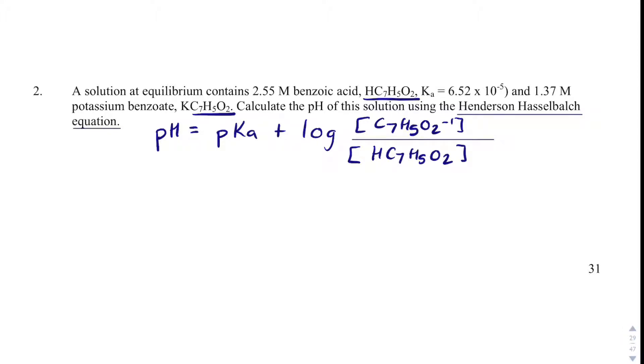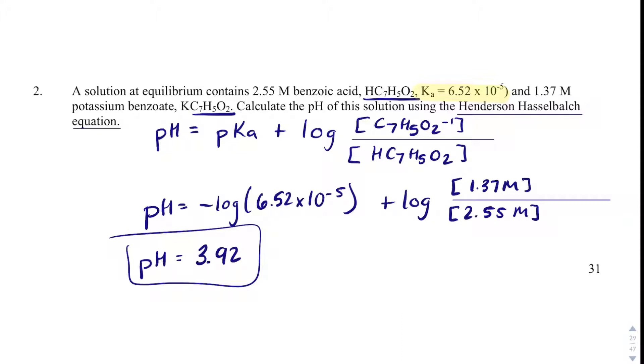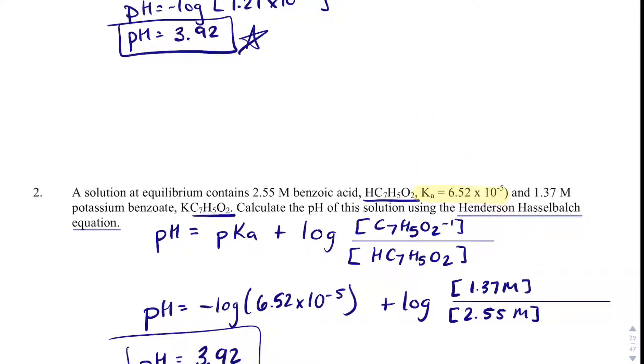And all we're going to do is plug in what we know. We are trying to solve for pH. They do not give me the pKa, but they do give me the Ka. And so what I can do is just call that negative log of the Ka, so negative log 6.52 times 10 to the minus 5, plus log of the conjugate base, which is 1.37 molar, divided by 2.55 molar for the acid. Go ahead, plug that into your calculator. And you actually get the same exact answer as what we got before, just proving that this equation actually does work.